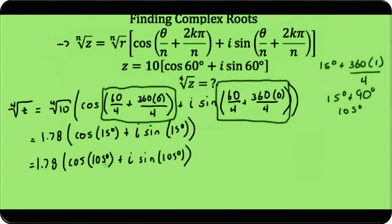So again we have 15° — that's 60°/4 — plus (360 times 2)/4. This equals 180. So I have 15° plus 180°, which equals 195°. So my third solution for this fourth root is 1.78[cos 195° + i sin 195°].